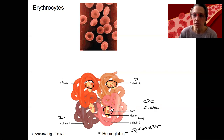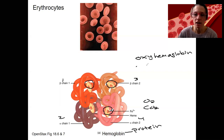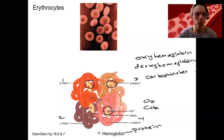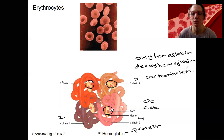There are different forms of hemoglobin. There is oxyhemoglobin, which means hemoglobin that has oxygen bound to it. There is deoxyhemoglobin — no oxygen bound to it. And there is carboaminohemoglobin, which has CO2 bound to it. We will look at each of these three more closely when we get to the respiratory system, where we'll examine gas transport on red blood cells more carefully.